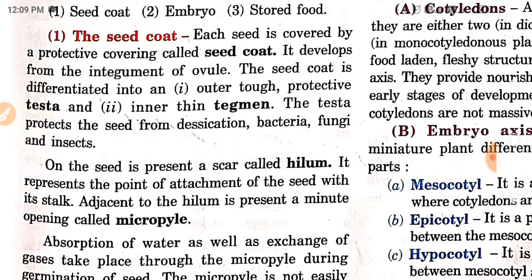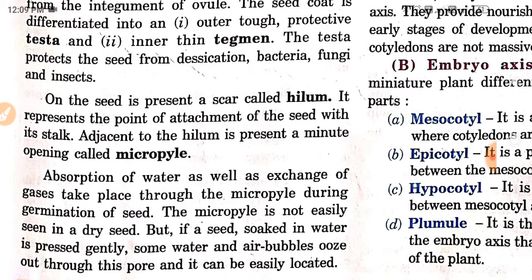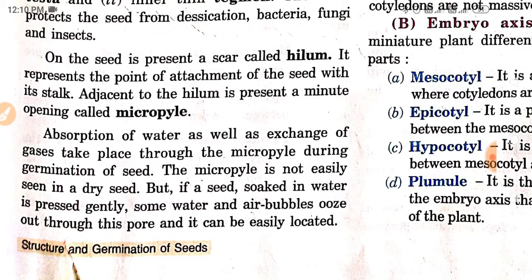On the seed is present a scar called the hilum, which represents the point of attachment of the seed with its stalk. Adjacent to the hilum is a minute opening called the micropyle. It is the opening through which pollen enters the ovule. Absorption of water as well as exchange of gases take place through the micropyle during germination. The micropyle is not easily seen in a dry seed, but if a seed soaked in water is pressed gently, water and air bubbles ooze out through this pore.